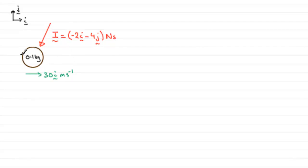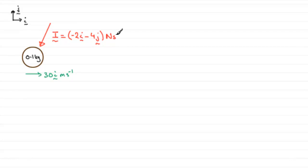We've got our particle, our tennis ball, mass 0.1 kilograms, and it's moving with a velocity of 30i meters per second. It's given an impulse by a racket of minus 2i minus 4j newton seconds. We've got to find the final velocity of the ball immediately after being hit.